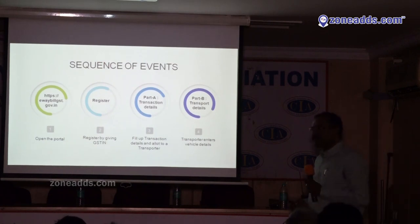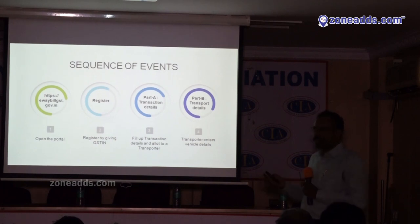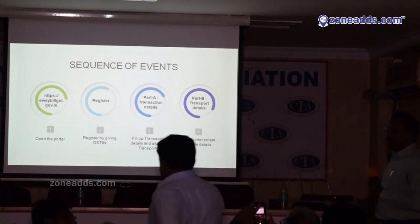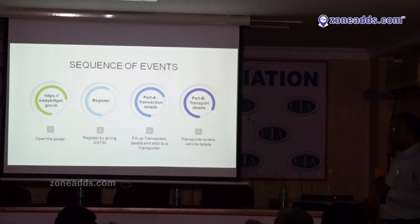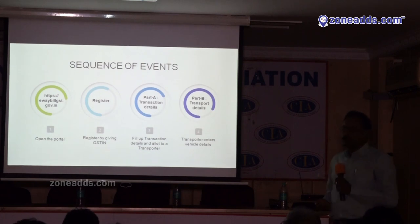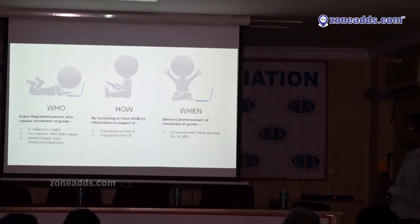The sequence of events: first you log into the system and register yourself. Then you fill Part A of EWB Form 1 — Part A consists of transaction details and invoice details — and then Part B, which is the transporter details, is filled by the transporter.